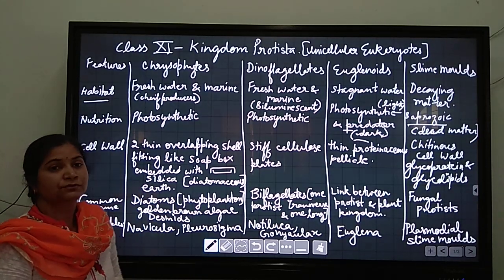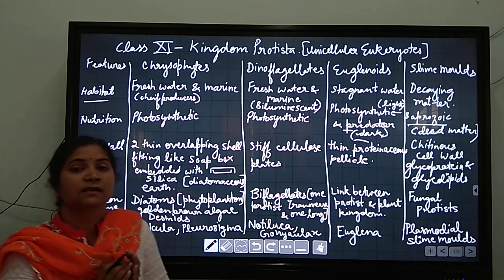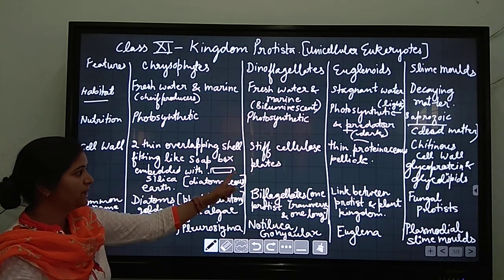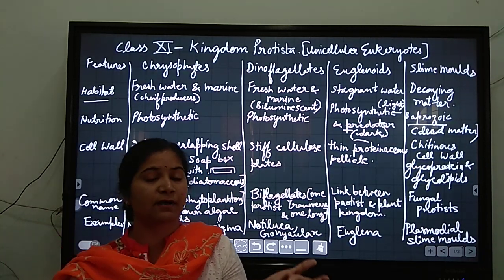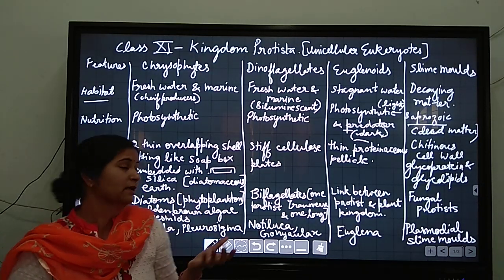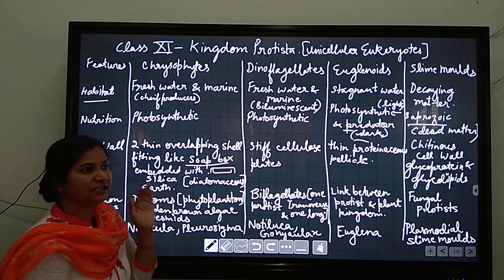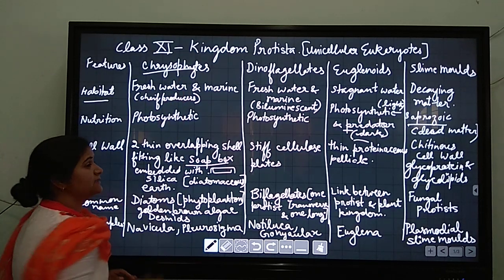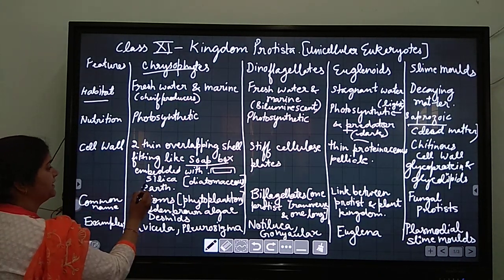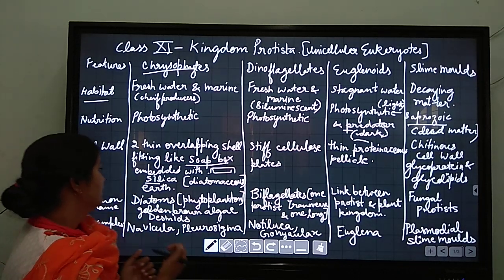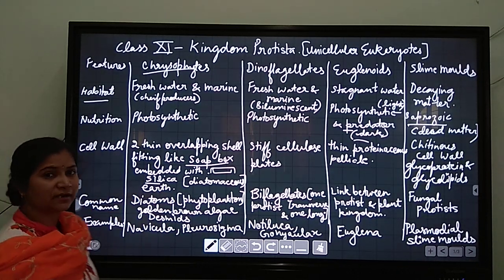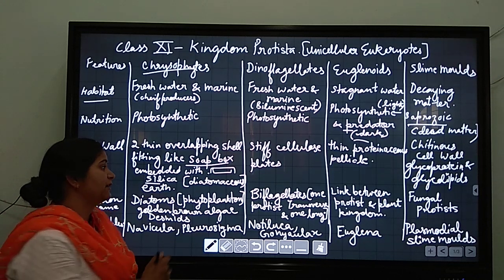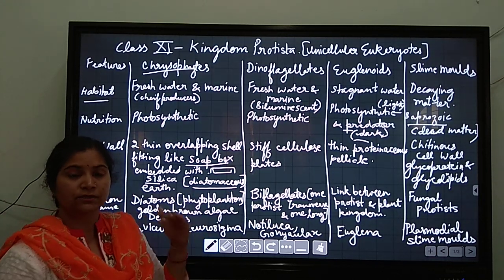Now coming to the cell wall. Two thin overlapping cell walls are present, shell-like structures are present. Here I have drawn one top cover and bottom lid - like a soapbox that fit in each other. Such kind of cell walls are present in the diatoms or chrysophytes. It is a characteristic feature and is embedded with silica. Now this silica is indestructible, cannot be destroyed. After the death of the organism, it keeps on accumulating and forming the diatomaceous earth on the ocean floor.